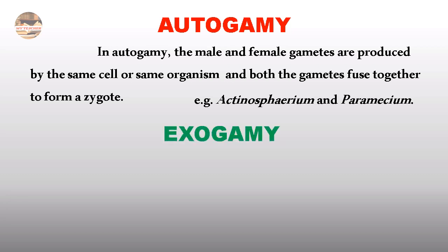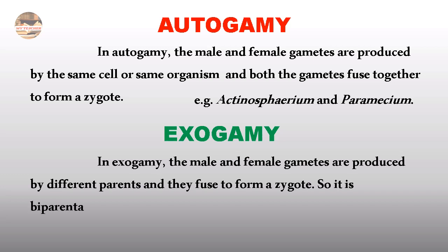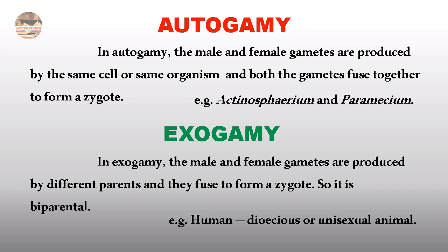In Exogamy, the male and female gametes are produced by different parents and they fuse to form a zygote. So it is biparental. Examples are human beings, which are dioecious or unisexual animals — meaning there will be a separate male organism and a female organism.